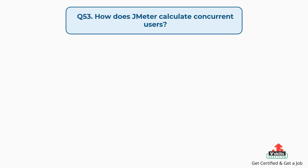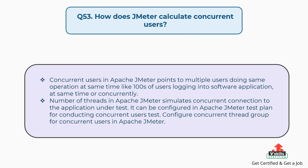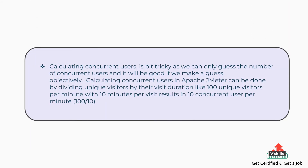Question 53: How does JMeter calculate concurrent users? Concurrent users in JMeter refers to multiple users doing the same operation at the same time, such as 100 users logging in concurrently. The number of threads simulates concurrent connections. Calculating concurrent users is tricky — a useful approach is to divide unique visitors by their visit duration. For example, 100 unique visitors per minute with 10 minutes per visit results in 10 concurrent users per minute.